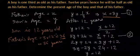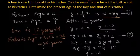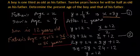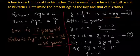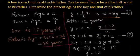So these are our solutions: 12 years, which is son's age, and 36 years, which is father's age. These values are the same as we found in our previous method. It's completely up to you which method you find easy or want to practice, but I advise you to practice both methods because both of them are very important.